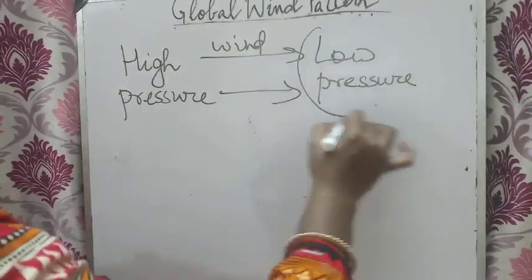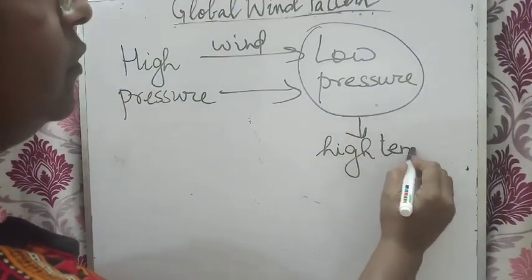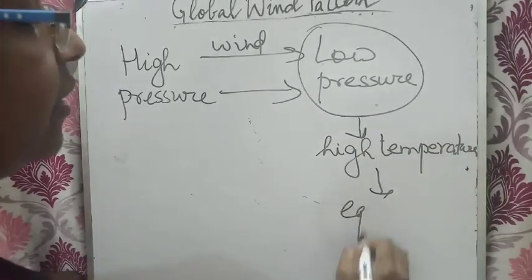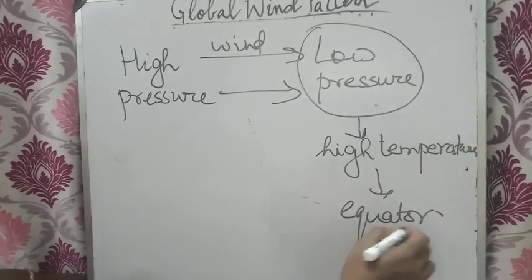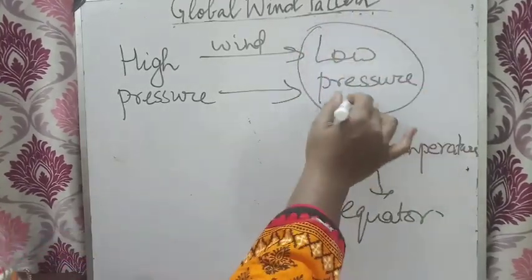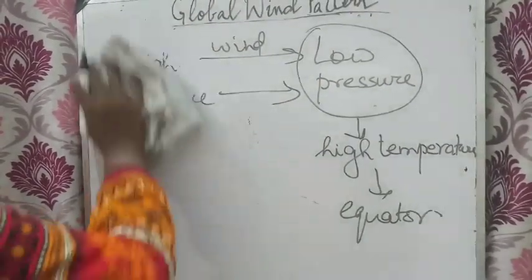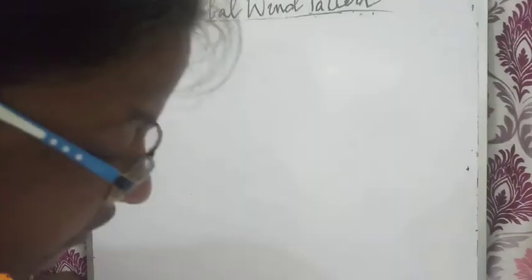On the equator, pressure is very low and temperature is high. Why? Because on the equator, direct sunlight is received. So heat will be more, temperature will be high, and as a result, pressure will be low. We are going to use this for understanding the wind pattern. One more thing: the name of a wind is given based on the direction from which it blows.